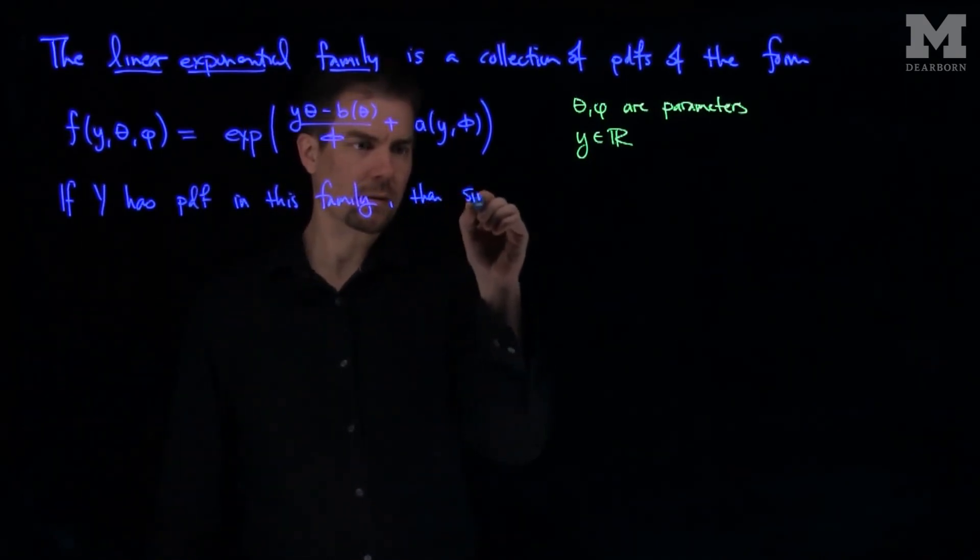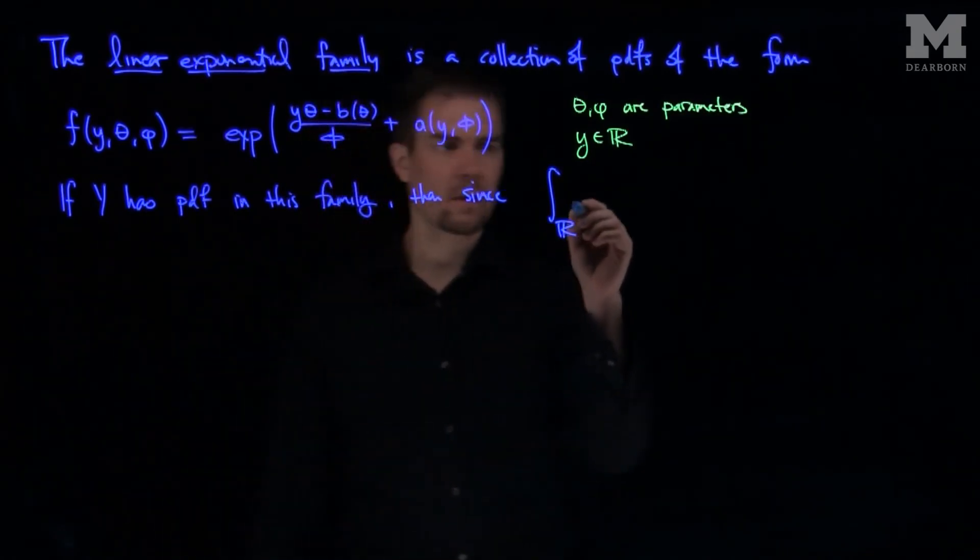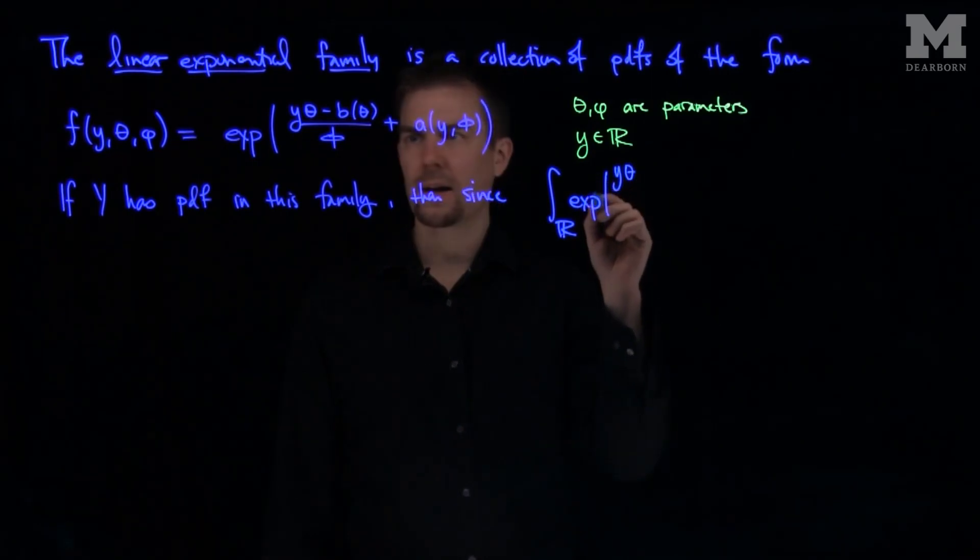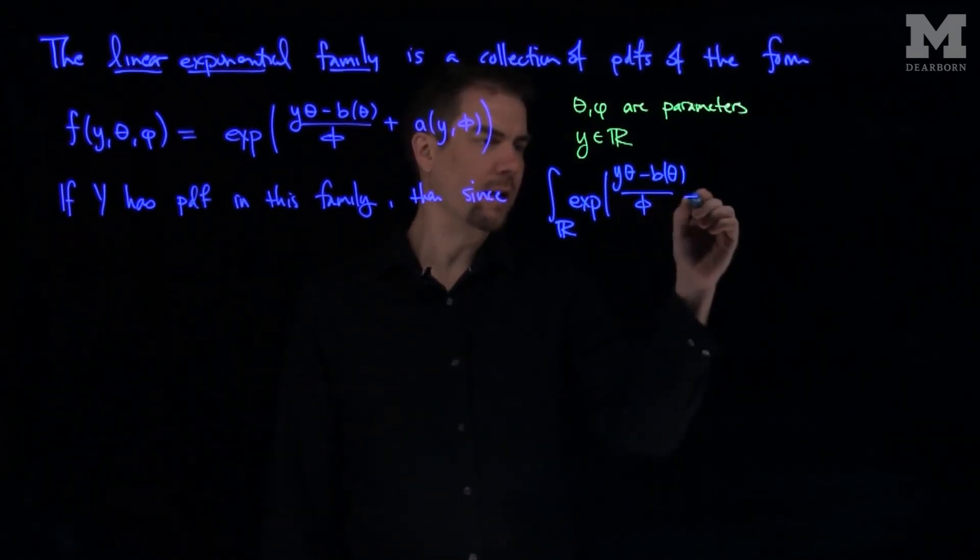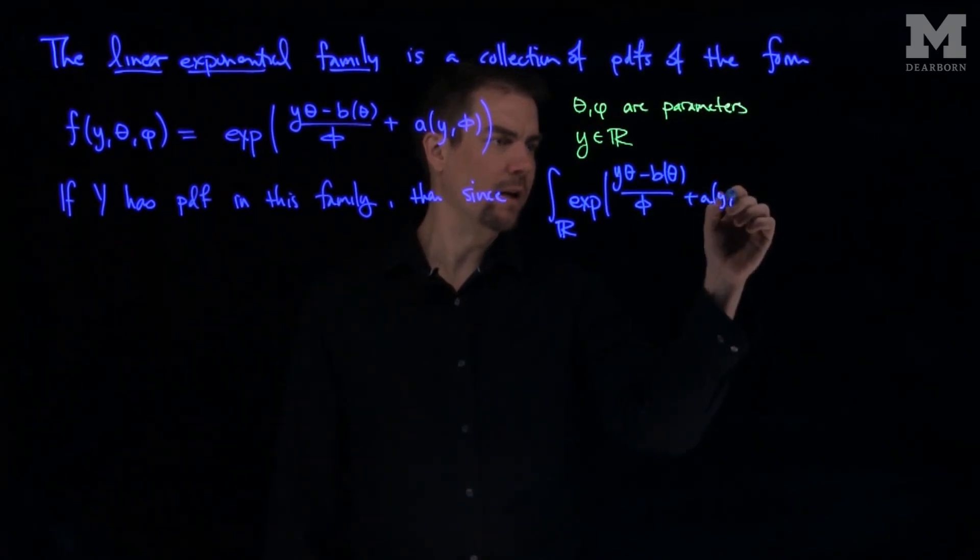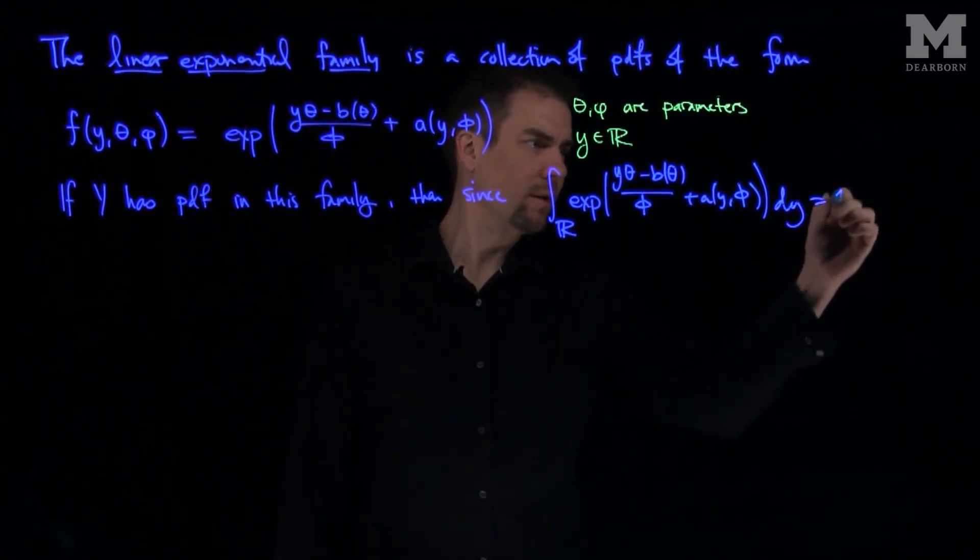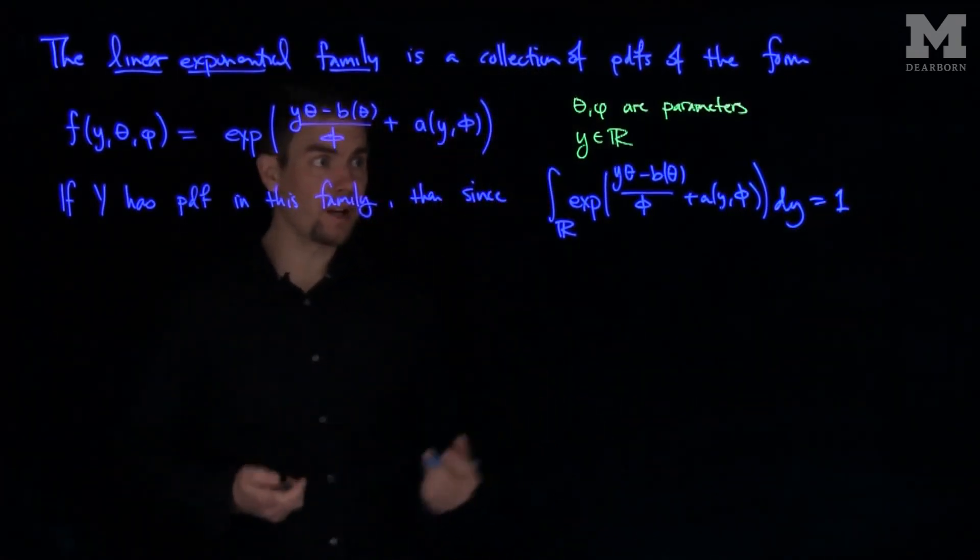Since the integral over ℝ of exp((yθ - b(θ))/φ + a(y,φ)) dy equals 1, of course this will integrate to 1 since it is a PDF.